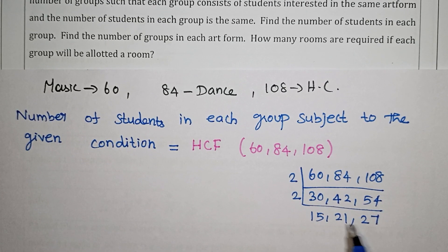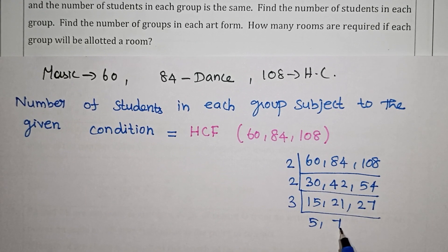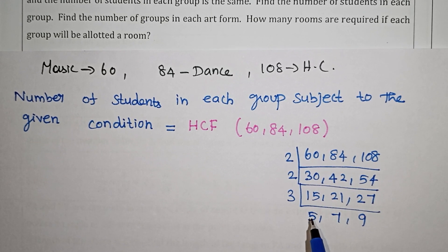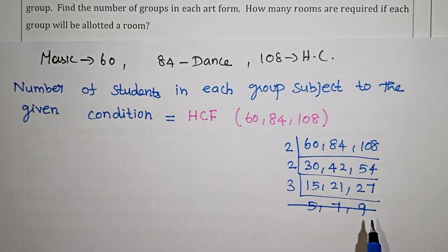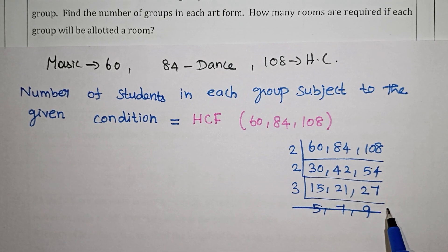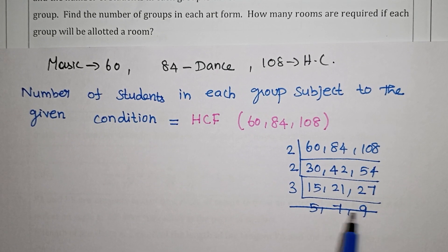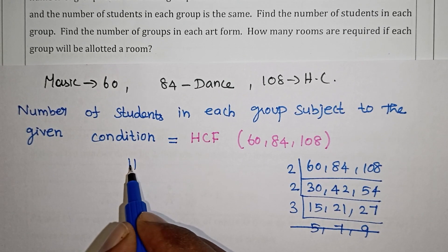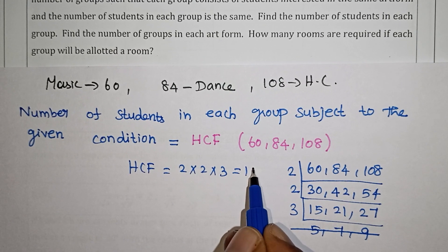So we have 15, 21, 27 divided by 3 giving 5, 7, 9. Since 5, 7, and 9 have no common factor, we stop here. HCF = 2 × 2 × 3 = 12.